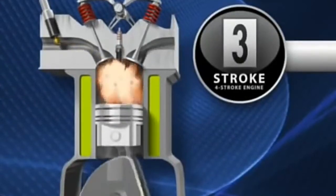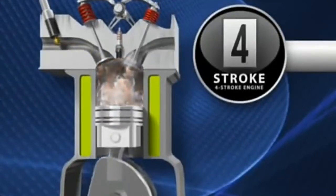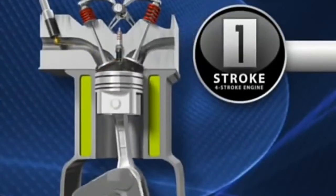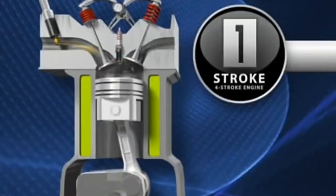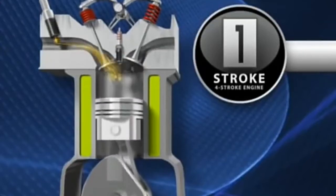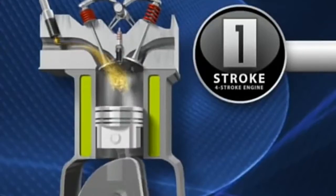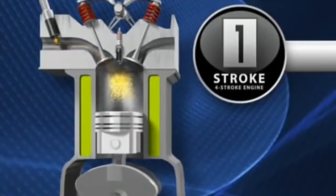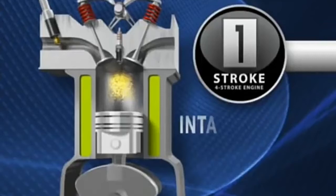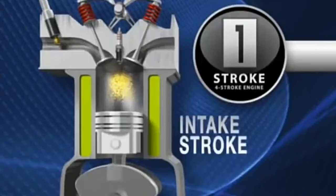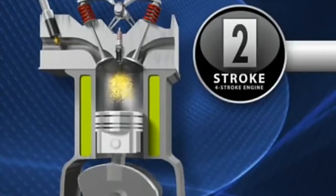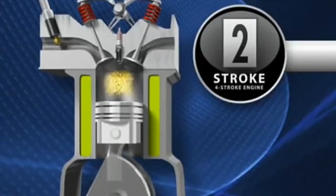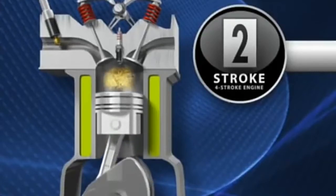Let's have a look at the four strokes of a spark ignition engine. The first stroke is the suction stroke, where the intake valve opens and the air-fuel mixture is sucked into the combustion chamber by the piston moving from TDC to BDC, completing the intake stroke. The second stroke is the compression stroke, where the piston moves from BDC to TDC, compressing the air-fuel mixture to high pressure and high temperature.